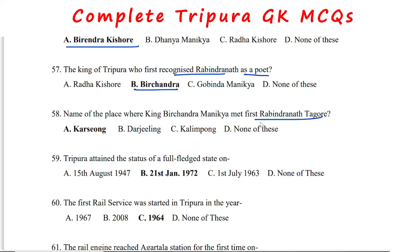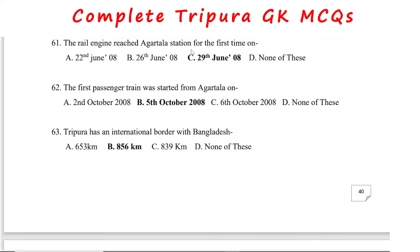The king known as the Bikram Aditya of Tripura was Virendra Kishor Manika. The king who first recognized Rabindranath as a poet was Virchandra Manika. King Virchandra Manika first met Rabindranath Tagore at Kharsayam. Tripura attained the status of a full-fledged state on 21st January 1972. The first rail service in Tripura started in 1964. Tripura has an international border with Bangladesh of 856 km.